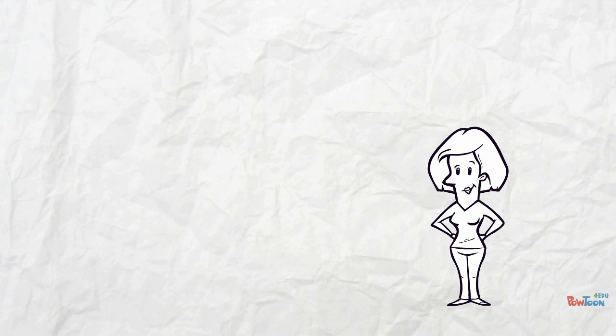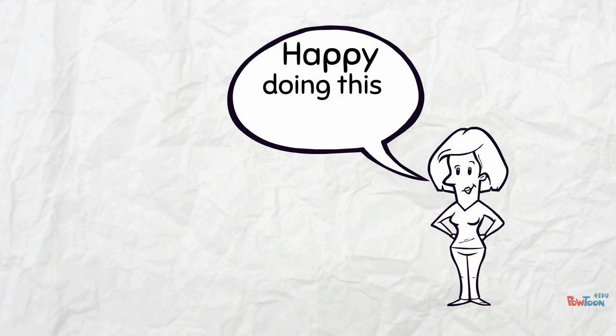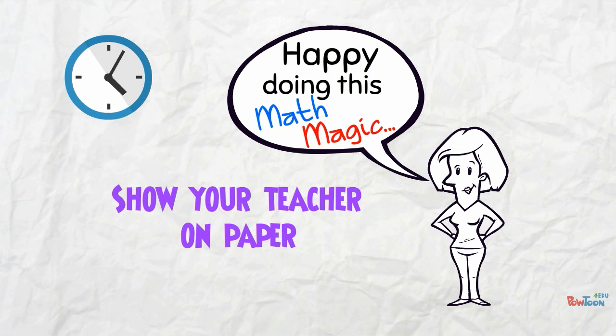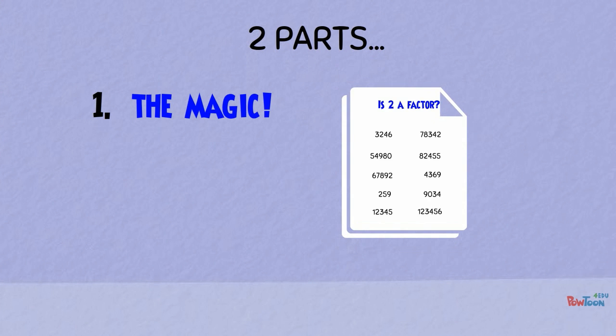Now if you are happy doing this math magic trick, it's time to show your teacher on paper. There are 2 parts to the work. Firstly, the magic part. You will be given a worksheet. Put a check mark beside each number that you think is divisible by 2 without a remainder.